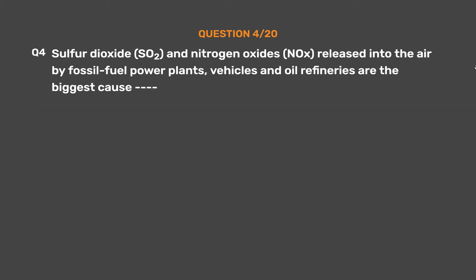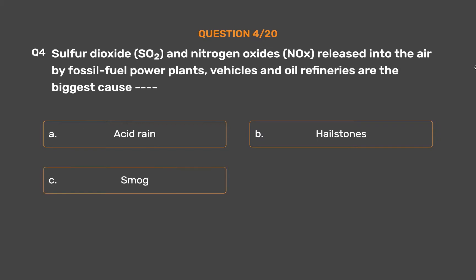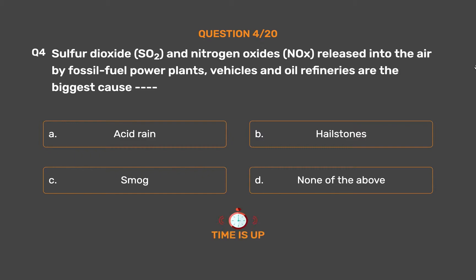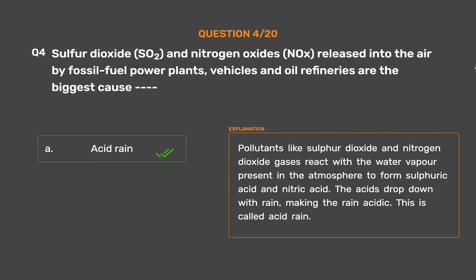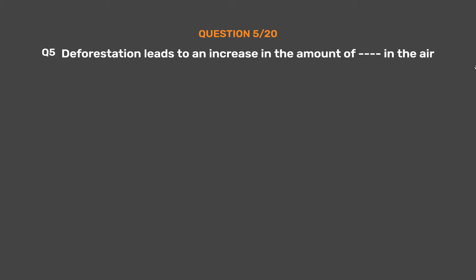Question number 4: Sulfur dioxide (SO2) and nitrogen oxides (NOx), released into the air by fossil fuel power plants, vehicles and oil refineries, are the biggest cause of — Option A: Acid rain. Option B: Hailstones. Option C: Smog. Option D: None of the above. The correct answer is Option A: Acid rain. Pollutants like sulfur dioxide and nitrogen dioxide gases react with water vapor present in the atmosphere to form sulfuric acid and nitric acid. The acids drop down with rain, making the rain acidic. This is called acid rain.